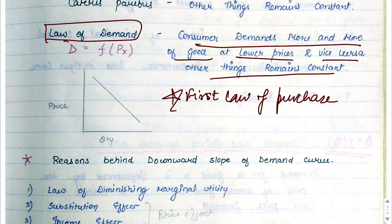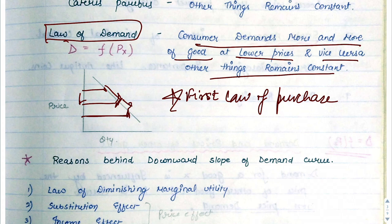The demand curve is always downward sloping. Why? Because as price decreases, demand increases. When price is reduced, our demand increases from that point — so the curve moves downward. This is why the demand curve will always be downward sloping.